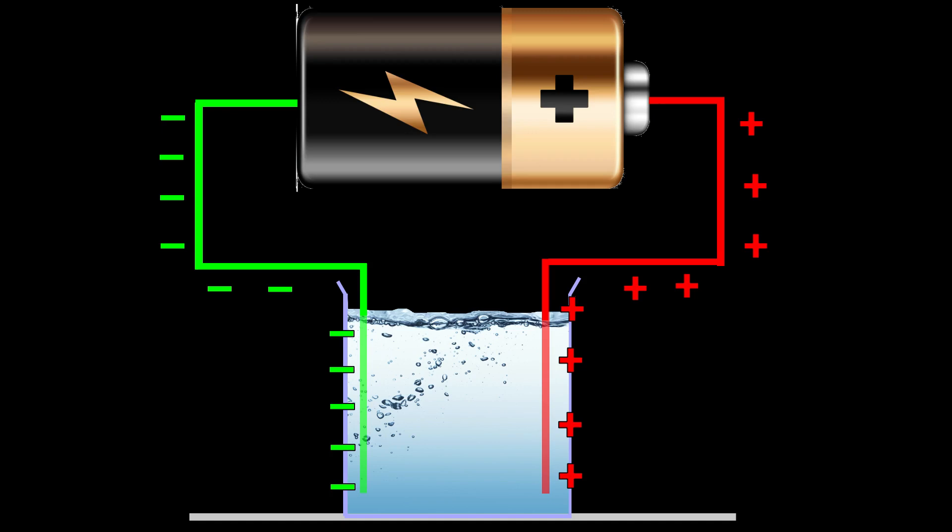We know that unlike charges attract each other, so negatively charged chlorine particles get attracted toward the wire connected to the positive terminal of the battery, and positively charged sodium particles get attracted toward the wire connected to the negative terminal.